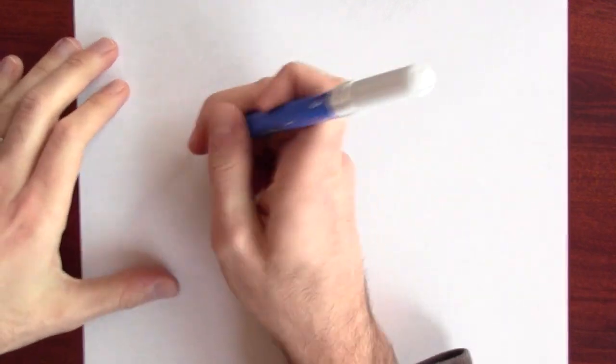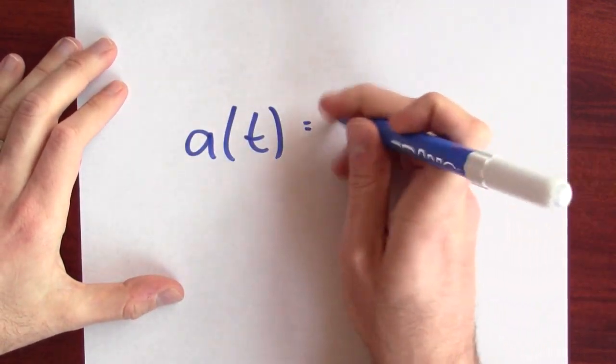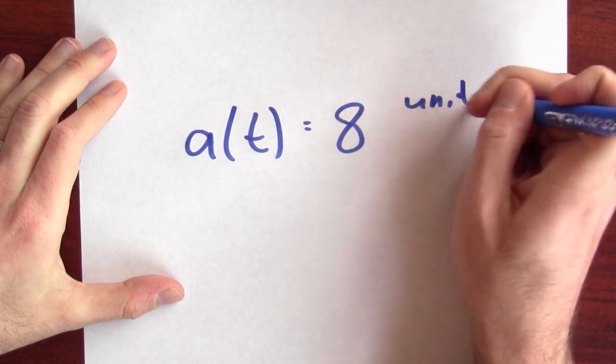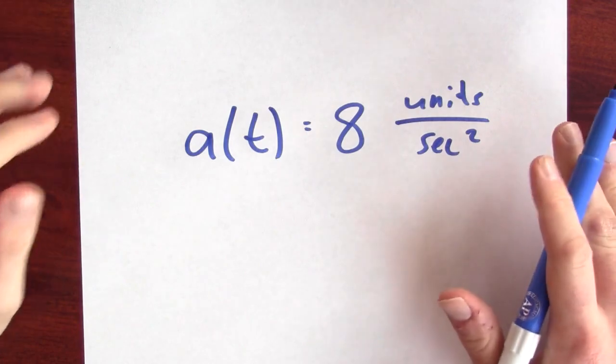Maybe I don't know my position and my velocity, but I know my acceleration. Maybe my acceleration at some time t is just a constant 8 units per second squared. So I'm going to accelerate at a constant rate.